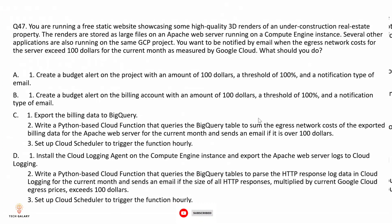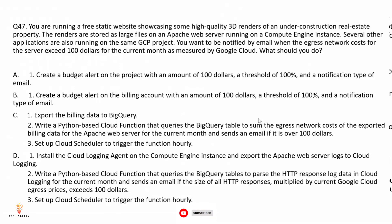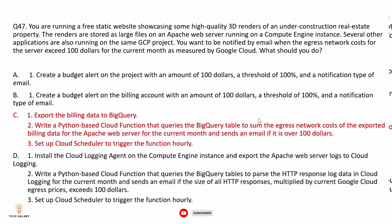Question 47: You are running a free static website showcasing 3D renders of a real estate property. The renders are stored on an Apache web server on a Compute Engine instance. Several other applications are also running on the same GCP project. You want to be notified by email when the egress network costs for the server exceed $100 for the current month. The correct answer is option C.